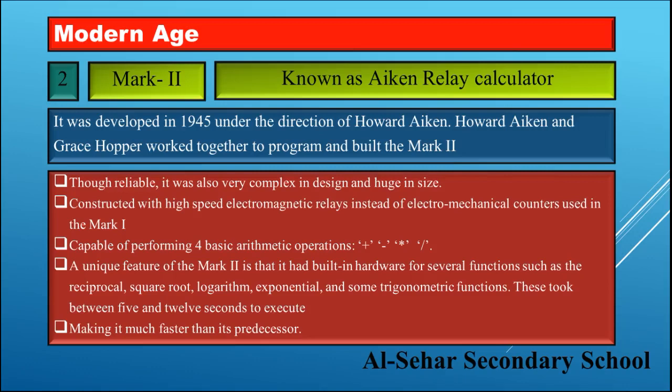Mark Two was capable of performing four basic arithmetic operations: addition, subtraction, multiplication, and division. A unique feature of Mark Two is that it had built-in hardware for several functions such as the reciprocal, square root, logarithms, exponential, and some trigonometric functions. These took between 5 and 12 seconds to execute, making it much faster than its predecessor.